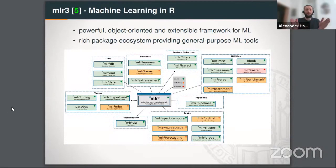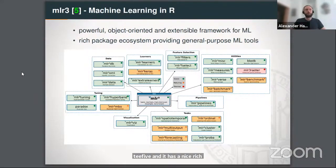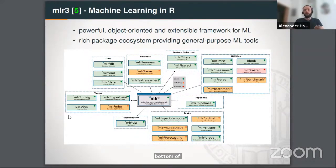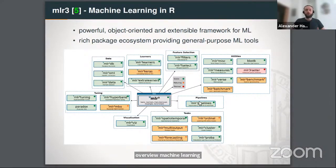The name MLR3 AutoML is quite long, so let me break it down. The first part is MLR3 — a powerful, object-oriented and extensible framework for machine learning, hence the name machine learning in R. It provides a rich package ecosystem with a lot of tools for machine learning: tuning, different algorithms, utilities, machine learning pipelines, and so on. I encourage everyone to check out MLR3.